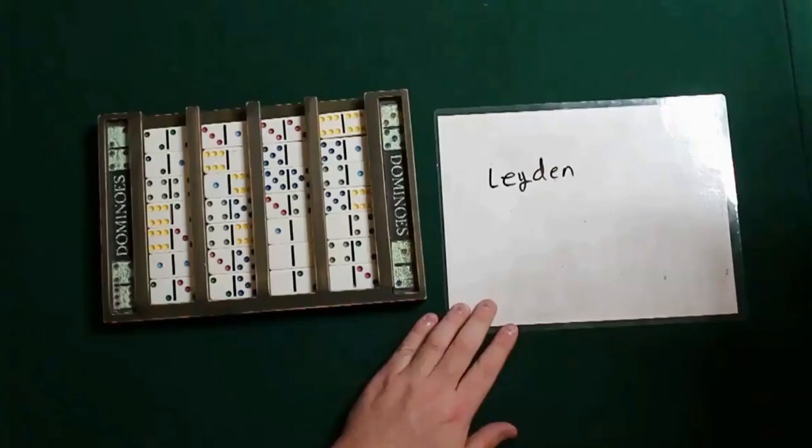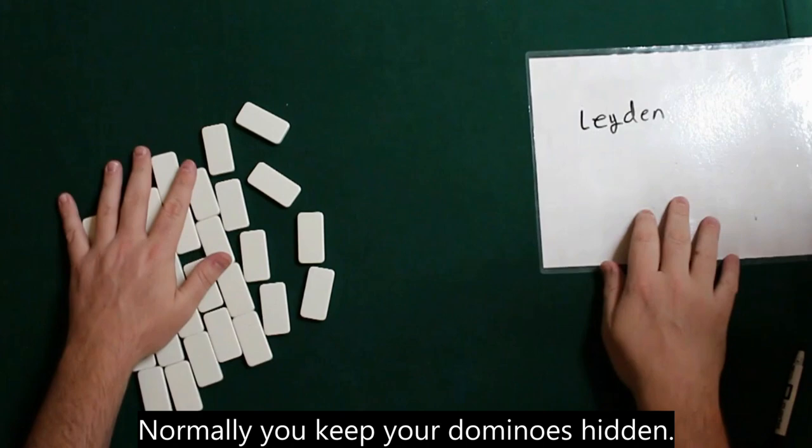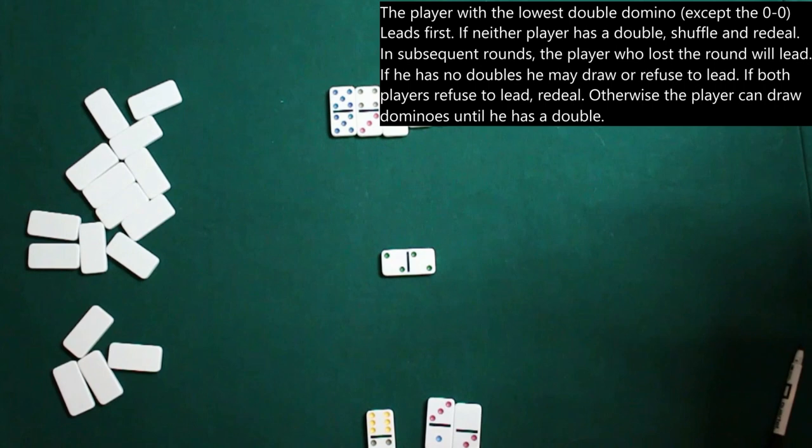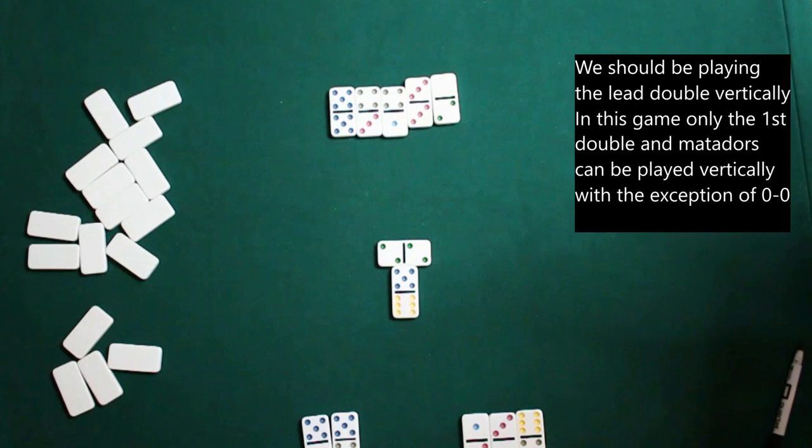And with the Matadors, you can play them inline or you can play them vertically, or perpendicular to the rest of the layout. Whoever has the lowest domino is going to start us out, and that domino will be played perpendicular. Now all four spaces on that domino can be played upon.